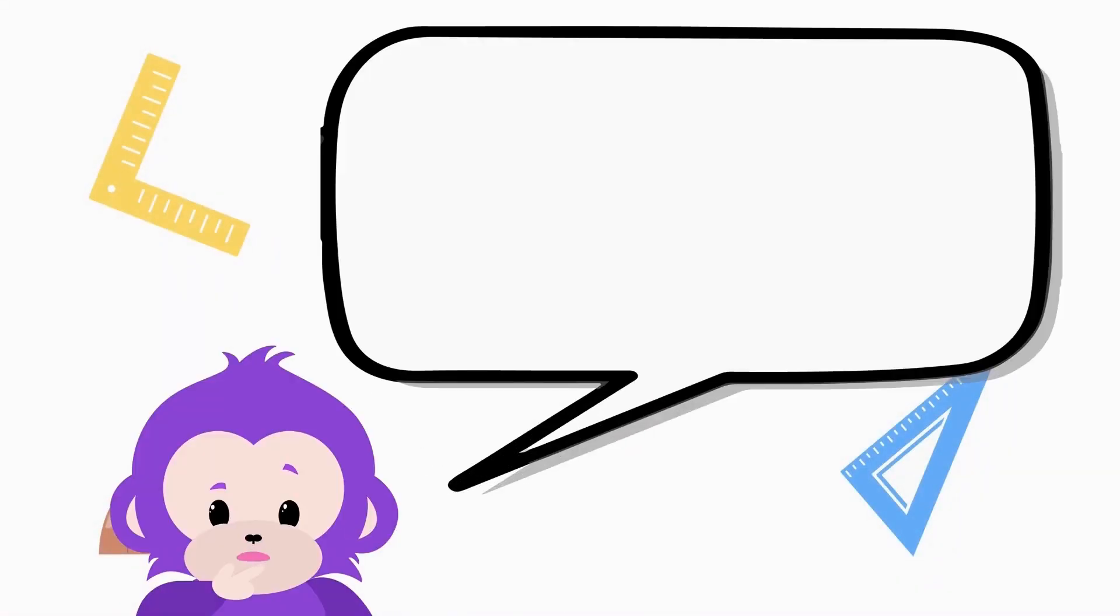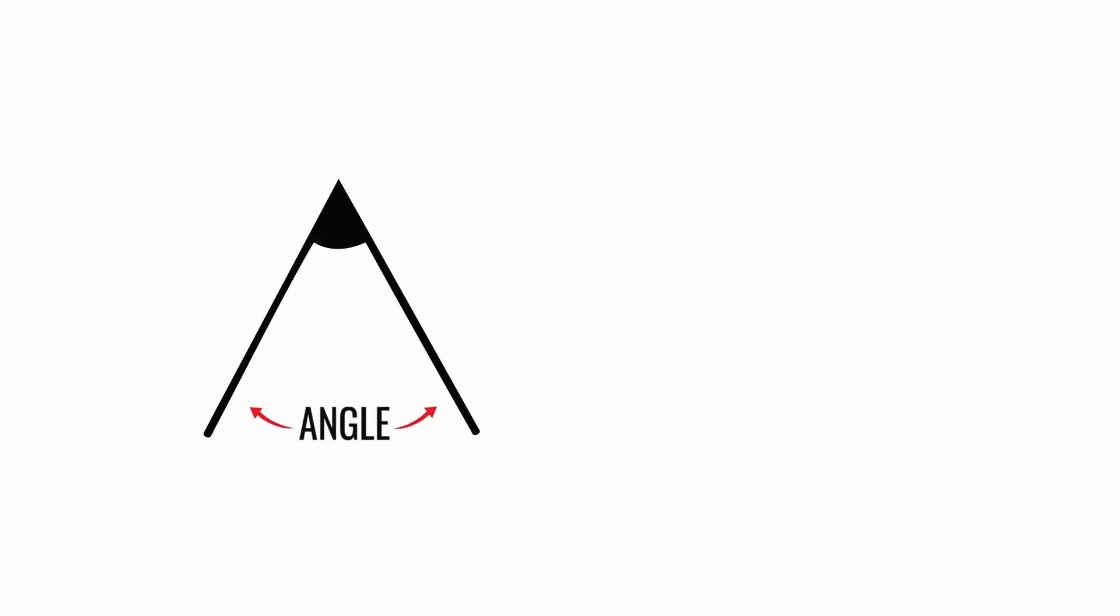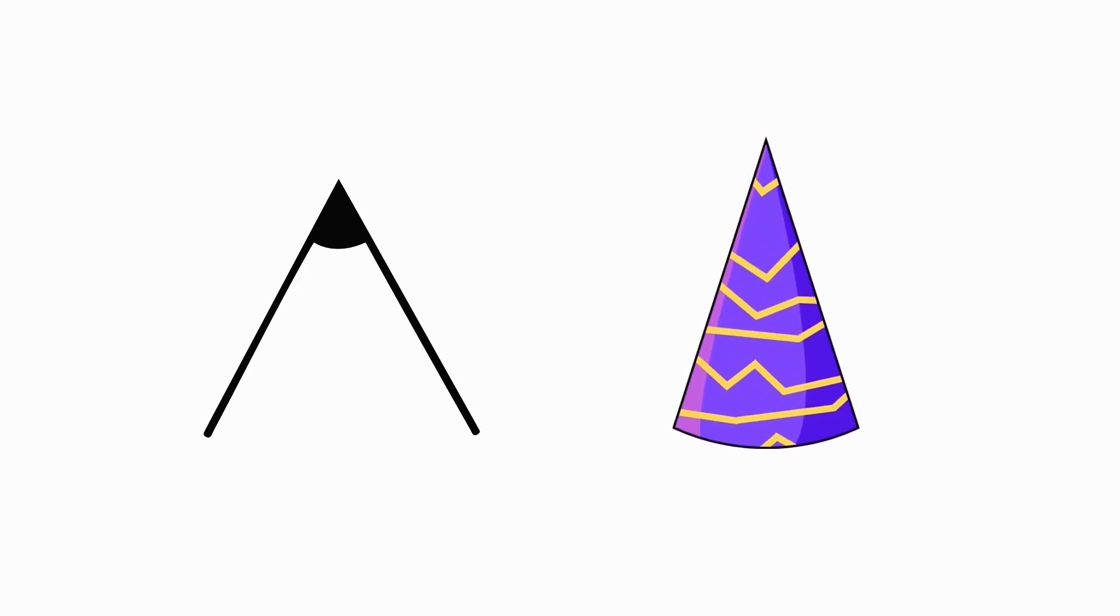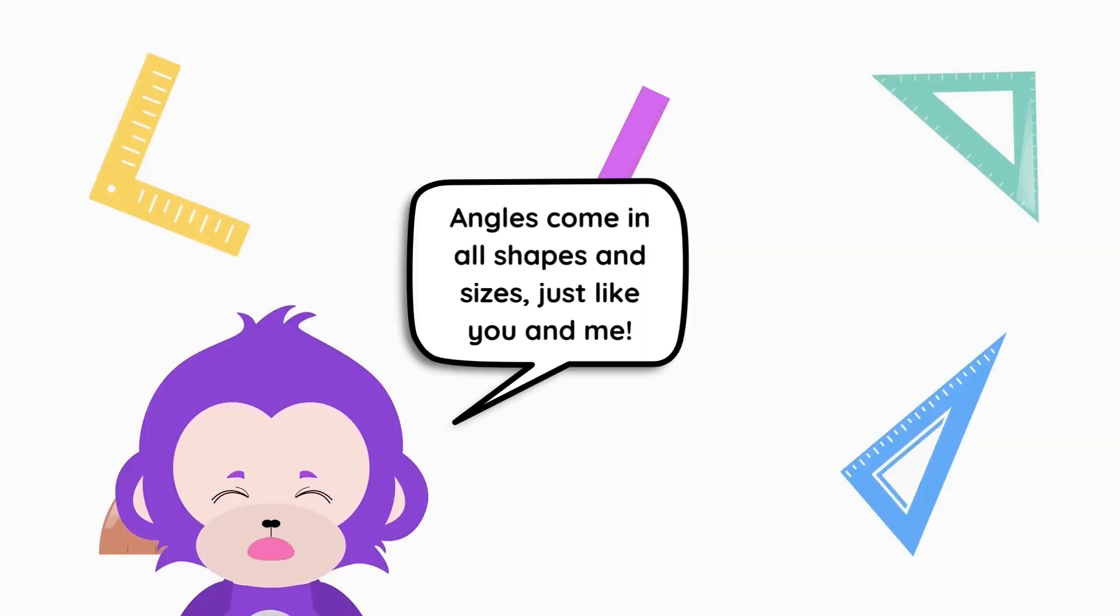So what are angles? Imagine two lines meeting up like friends on a playground. The space between them, that's an angle. The point where they meet is called the vertex, like the top of a triangle hat. Angles come in all shapes and sizes, just like you and me.